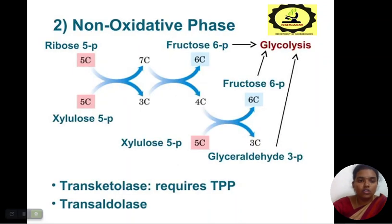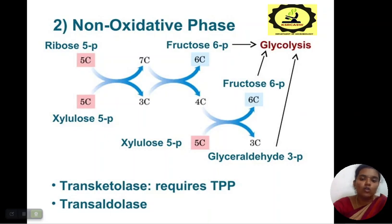In the non-oxidative phase, ribulose 5-phosphate and xylulose 5-phosphate give fructose 6-phosphate. This fructose 6-phosphate finally feeds into glycolysis.